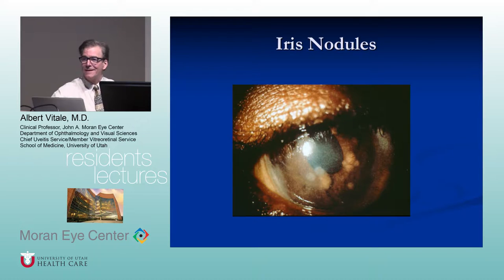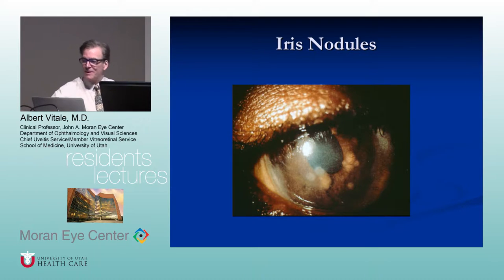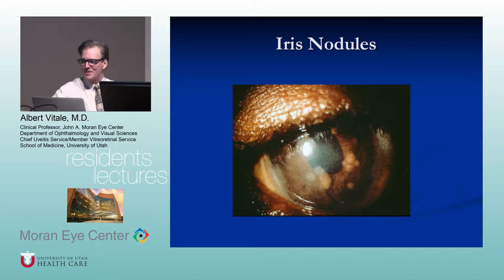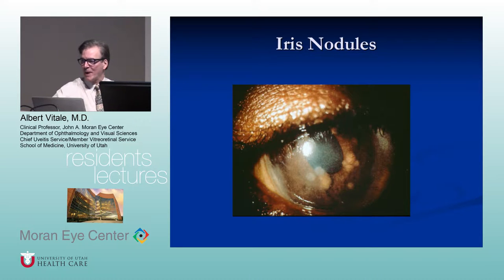Iris nodules: the ones near the pupillary margin are called Koeppe nodules — remember K-P for Koeppe and pupillary margin — and Busacca nodules are more in the stroma. This is actually a patient with sarcoidosis; they were treated with prednisone and topical corticosteroids, and these nodules went away.